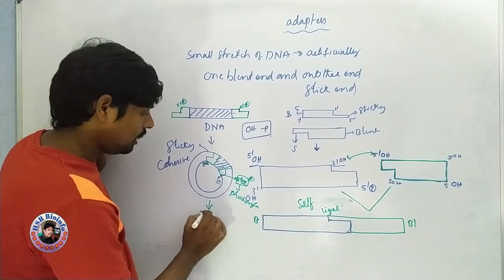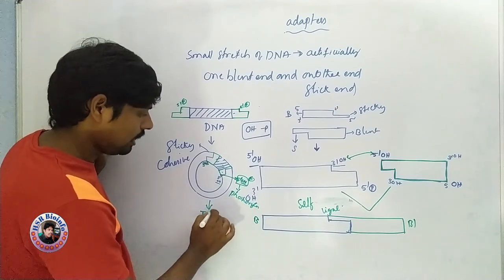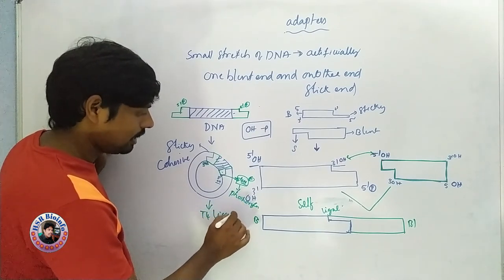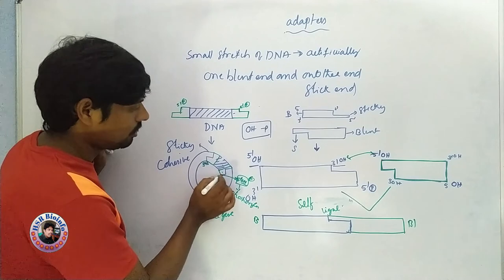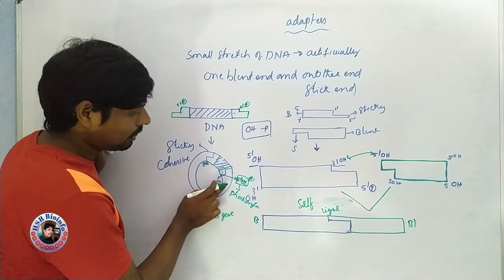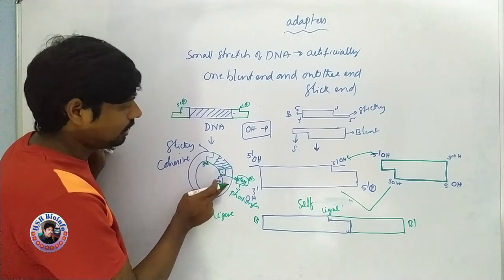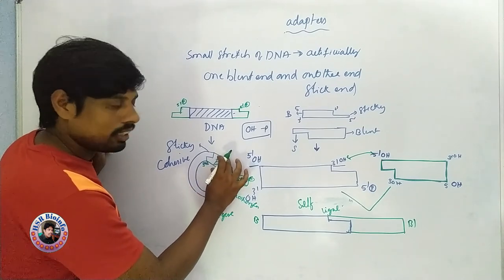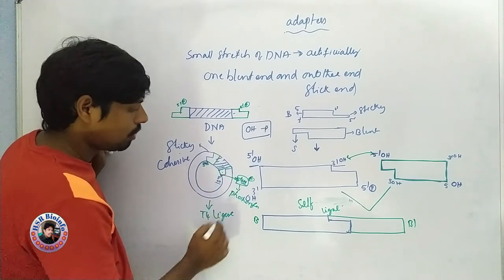Then we have T4 ligase enzyme. This ligase enzyme acts on the vector of DNA, and this DNA should be created.